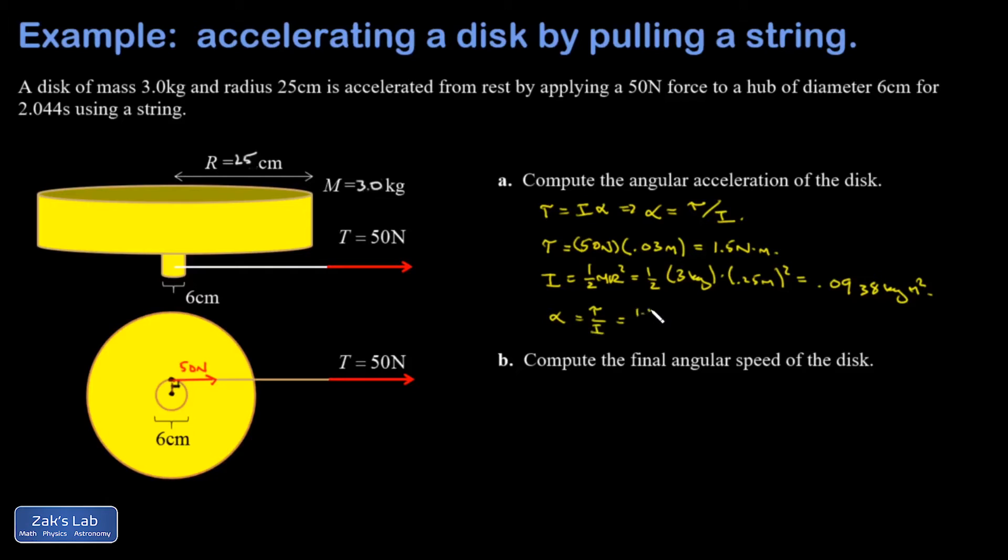So 1.5 Newton meters divided by 0.0938 kilogram meters squared, and I get an acceleration of 16.0 radians per second squared.